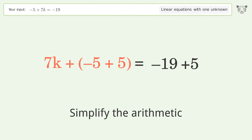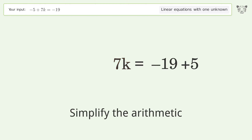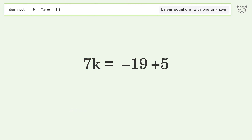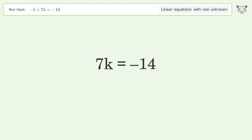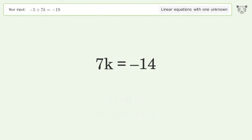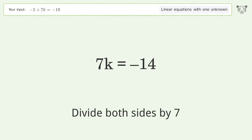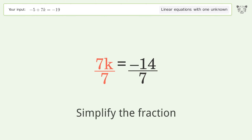Simplify the arithmetic. Next, isolate k by dividing both sides by 7. Then simplify the fraction.